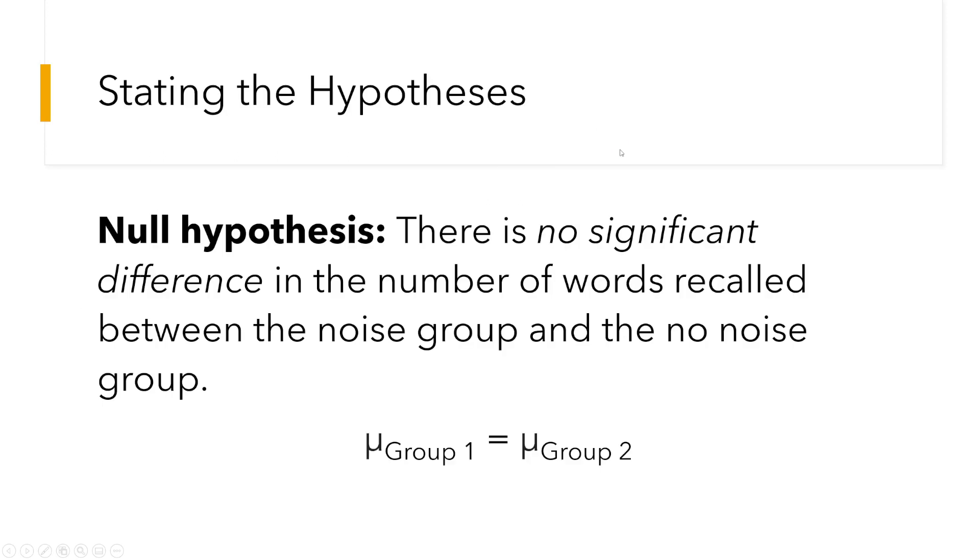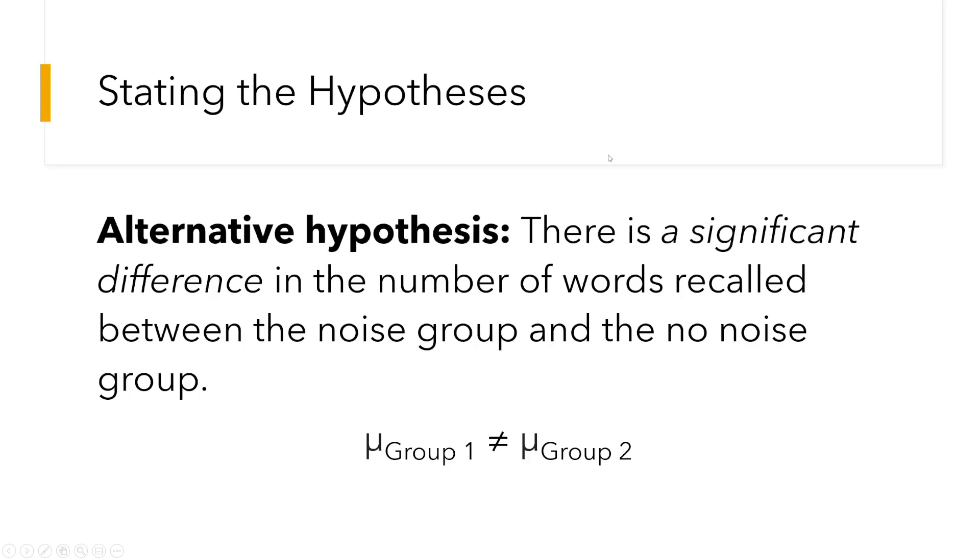Okay, so how are we going to state the null hypothesis here? So, if I was the researcher, I would do it like this. There is no significant difference in the number of words recalled between the noise group and the quiet group. Or, in this case, I use the no-noise group. You can also use the quiet condition. Well, the alternative hypothesis is that there is a significant difference in the number of words recalled between the noise group and the no-noise group or the quiet group.